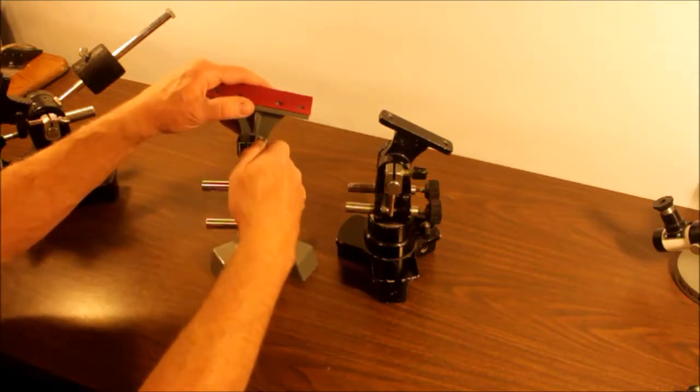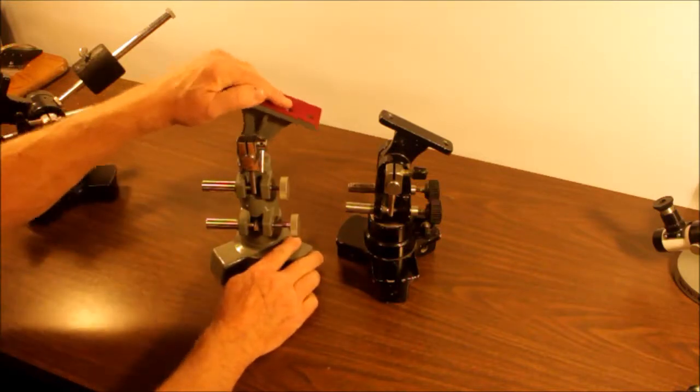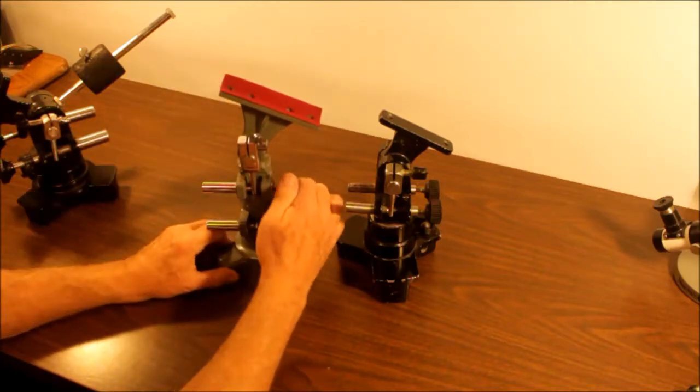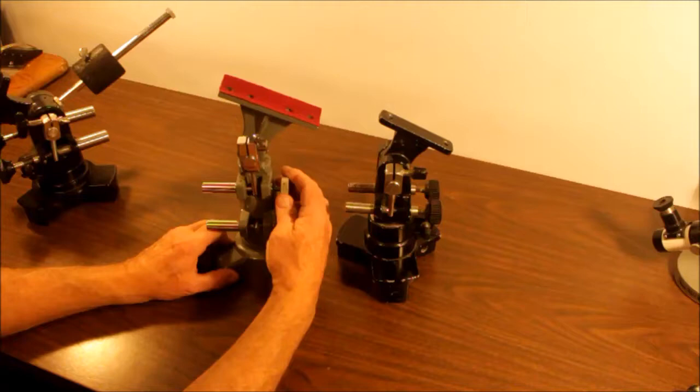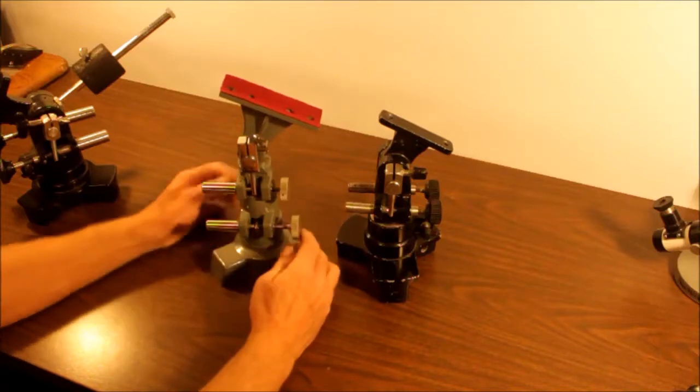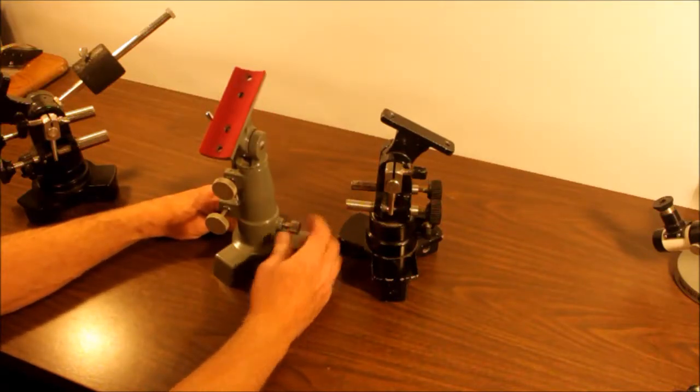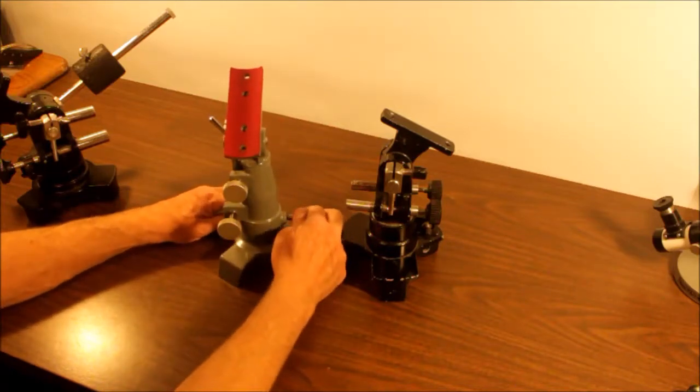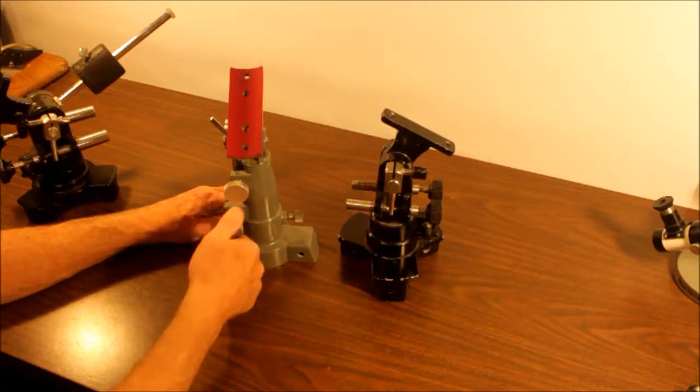You have a locking mechanism here for altitude. Lock down the altitude then you have slow motion, and then there's a locking mechanism over here for azimuth. When you lock it down you've got your slow motion azimuth control here.